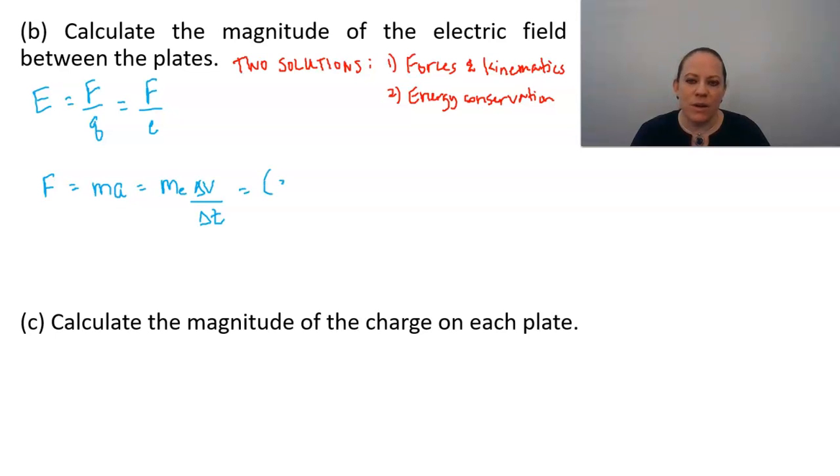And that's going to give us 9.11 times 10 to the minus 31st kilograms for the mass of the electron times 8.02 times 10 to the sixth, which is the final velocity of the electron, minus the initial velocity of the electron, 5.4 times 10 to the sixth. And that was all over 1.49 nanoseconds, which is of course 1.49 times 10 to the negative ninth.